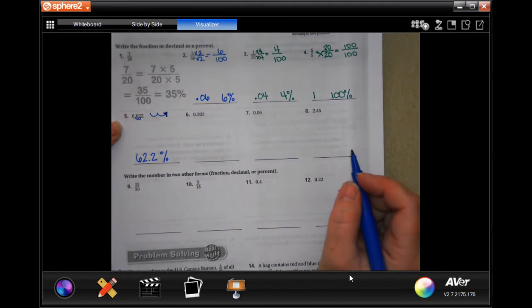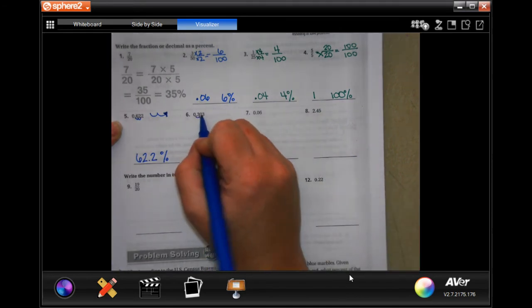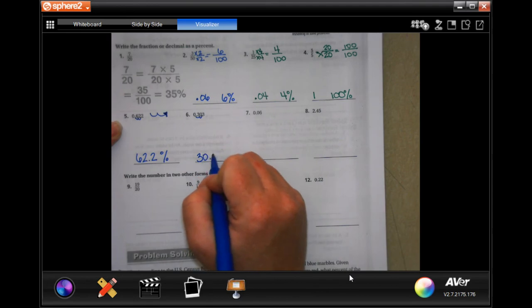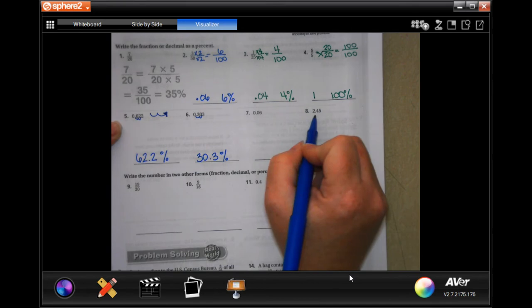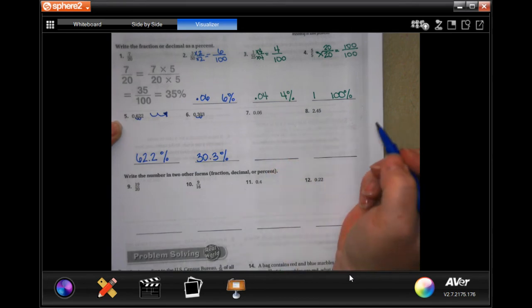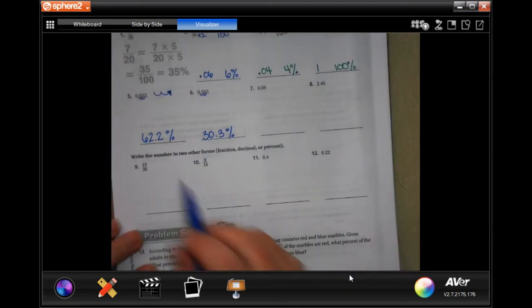1, 2, 30.3 percent. You guys do these. You can totally do that. Do 7 and 8.